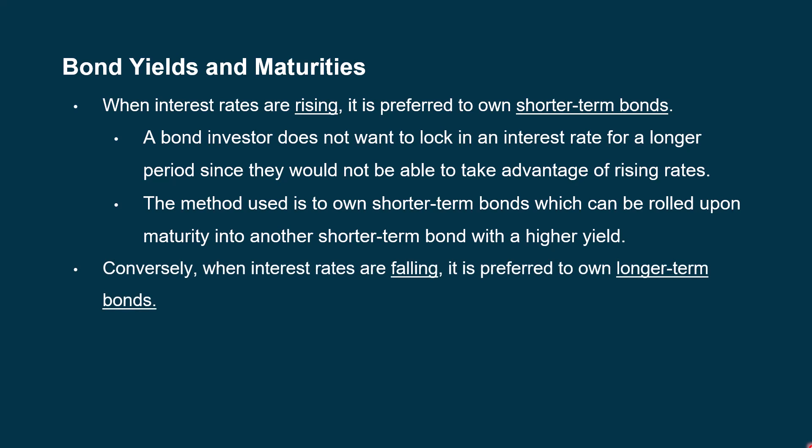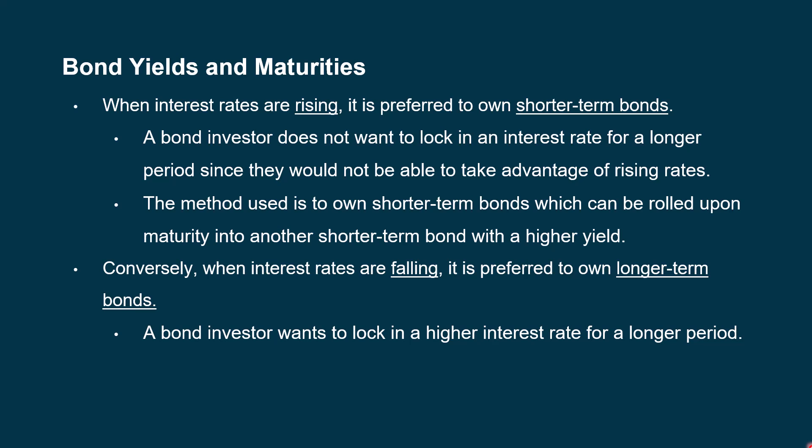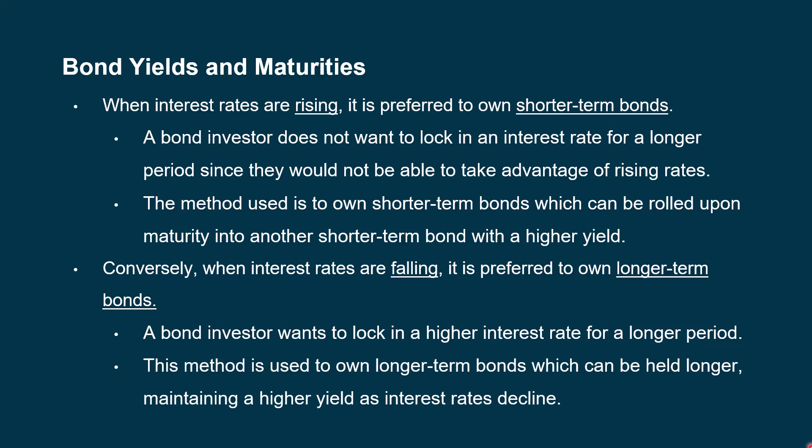Conversely, when interest rates are falling, it's preferred to own longer-term bonds. If you have a 10-year or 30-year bond, you've locked in a higher rate and rates are going down — you're doing much better at that point. A bond investor wants to lock in a higher interest rate for a longer period. This method is used when you own longer-term bonds, which can be held longer so you maintain that higher yield as interest rates continue to decline.